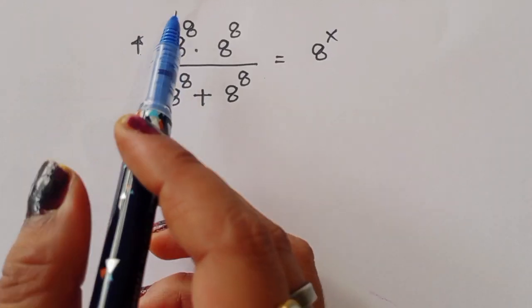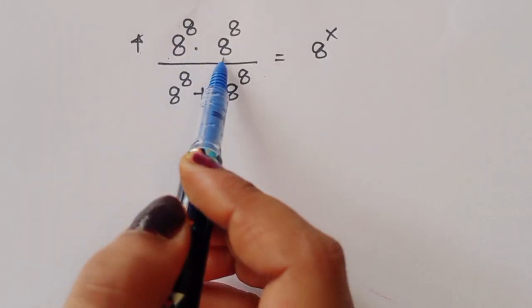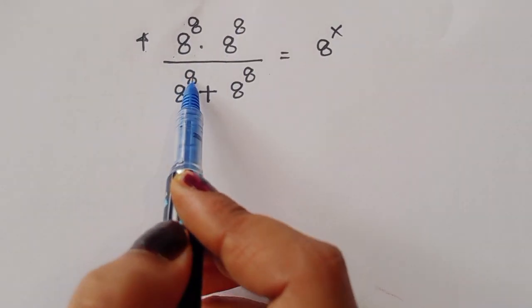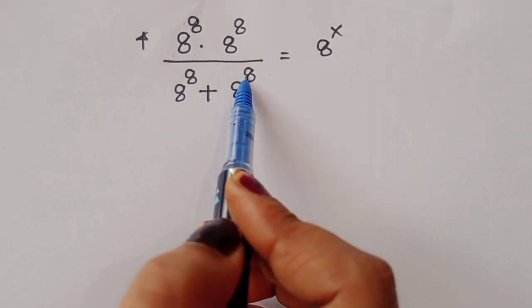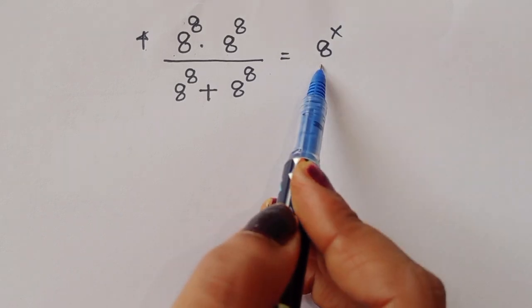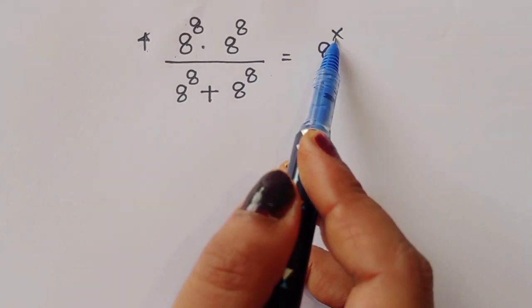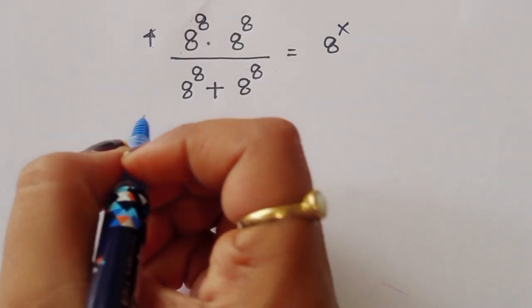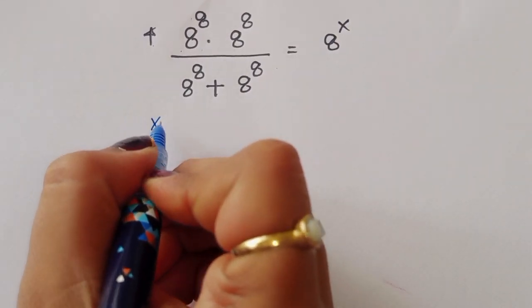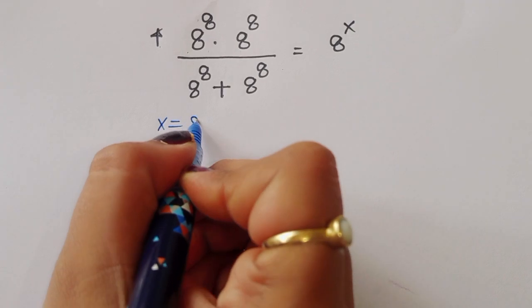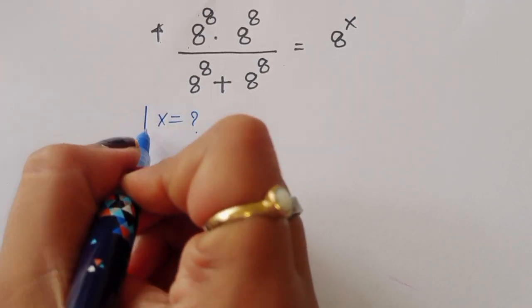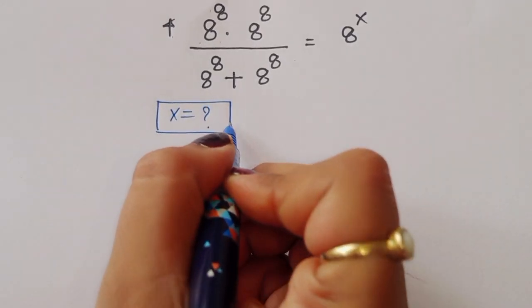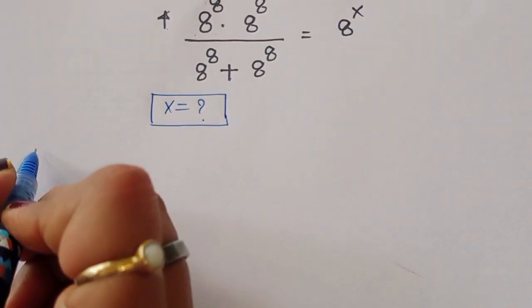The question is: 8 power 8 times 8 power 8, divided by 8 power 8 plus 8 power 8, is equal to 8 power x. We have to find out the value of x. Let's see the solution.